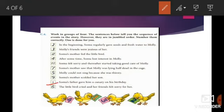First, see number one: what happened at first? Somo's father gave him a canary on his birthday. So this happened at first, so here number one is written. Then what happened? In the beginning, Somo regularly gave seeds and fresh water to Molly, so it is number two. Then what happened in the story? Molly's friends were jealous of her, so here it is number three. After some time, Somo lost interest in Molly, so it is number four. Molly could not sing because she was thirsty, so it comes at fifth position.